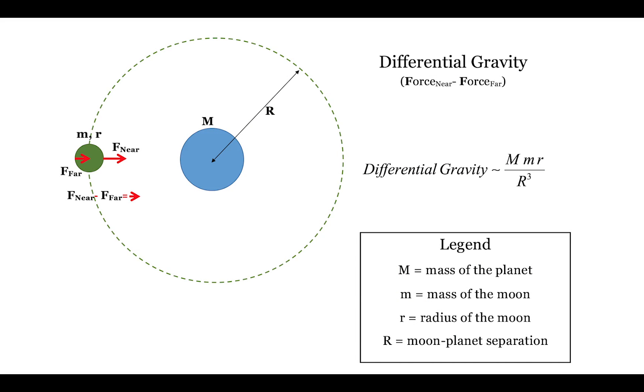The core mechanism underlying tidal heating is differential gravity. When a moon is pulled on by a planet's gravity, gravity pulls on the near side more strongly than the far side, effectively stretching the planet.